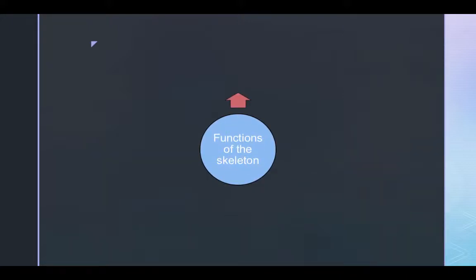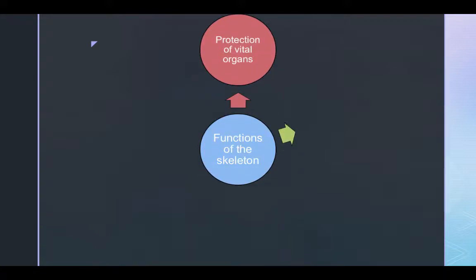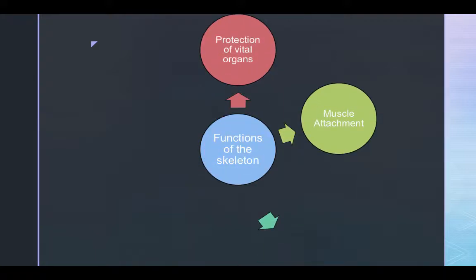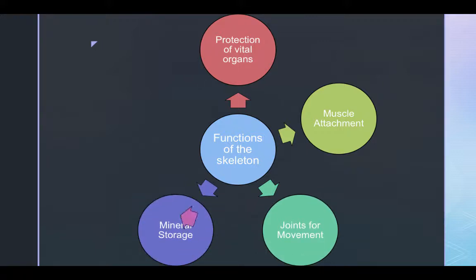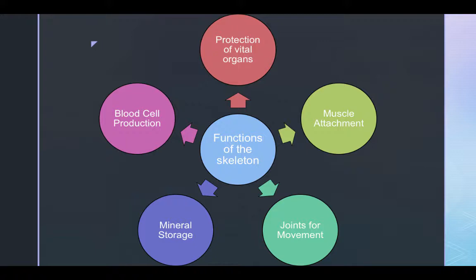The skeleton has five different functions: protect the vital organs, muscle attachment, joints for movement, mineral storage, and blood cell production.